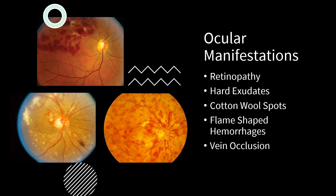Ocular manifestations of hypertension include retinopathy, hard exudates, cotton wool spots, flame-shaped hemorrhages, papilledema, retinal sclerotic changes, central retinal vein occlusion, and microaneurysms. Constricted visual fields may result from retinal vascular obstruction. A branch retinal vein occlusion would cause an inferior visual field cut. Cotton wool spots, hard exudates, and flame-shaped hemorrhages are visible in one image, while another shows a central retinal vein occlusion with the classic finding known as blood and thunder.